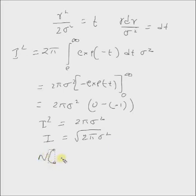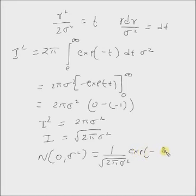The normal distribution N(0, sigma square) equals 1 over square root of 2 pi sigma square, times exponential of minus x square by 2 sigma square. And if you observe, the integral of this function is always going to be 1.